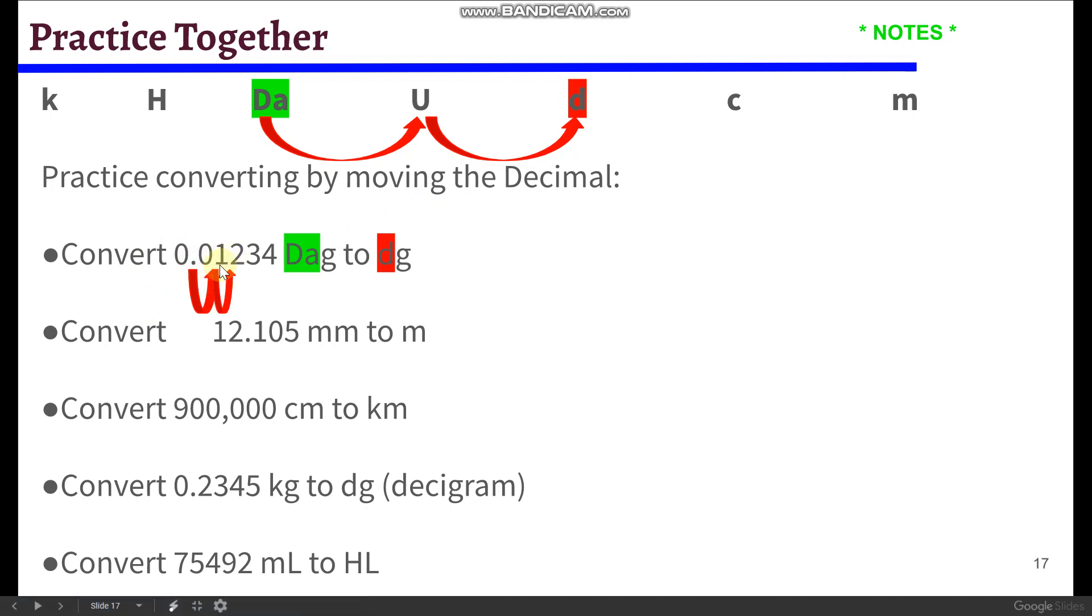So the decimal is going to end up in between the one and the two. So that's going to equal 001.234 decagrams. But it looks weird with the zeros in front. In fact, you guys probably heard me, I made a mistake while I was saying it, just because it looks so weird. So we're going to get rid of those zeros that are in front of the one. And we should end up with 1.234 decagrams.